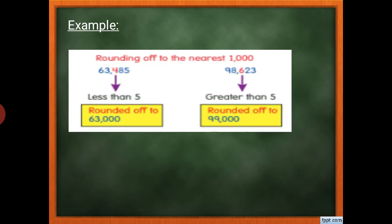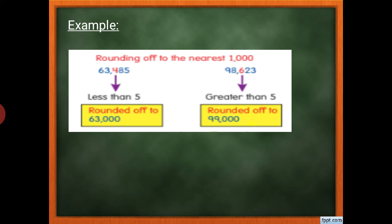For example: 63,485 rounded to the nearest thousand — the hundreds digit is 4, which is less than 5, so 63 remains the same and we get 63,000. In the next example, the hundreds digit is 6, which is greater than 5, so we add one to the thousands digit: 8 becomes 9, giving 99,000.